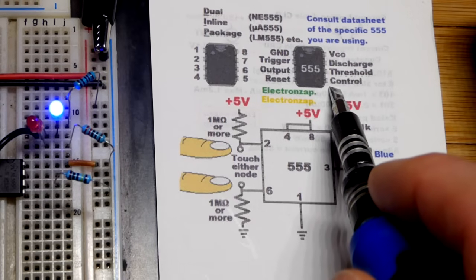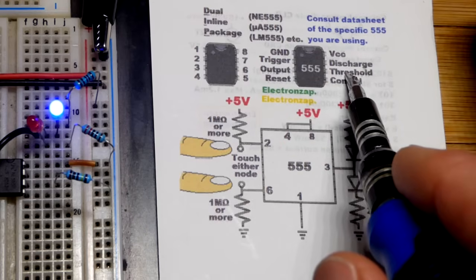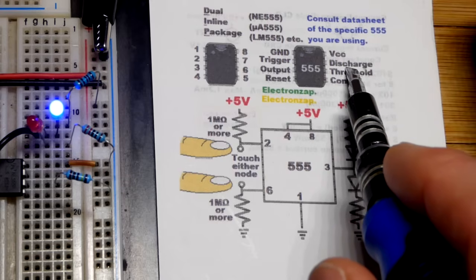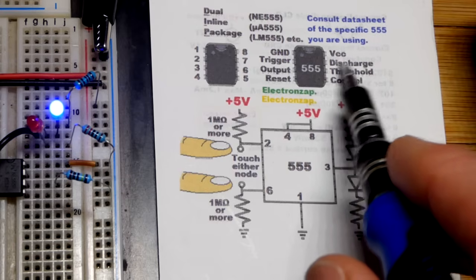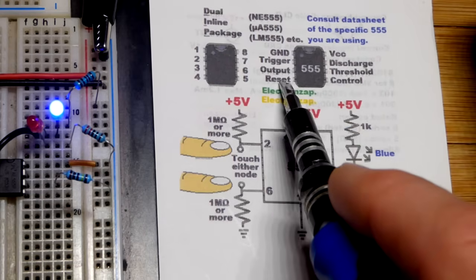There's the pin names. I used the name of the trigger pin. I think I said threshold. That's pin six. Discharge, we're not discharging anything in the circuit. That connects to ground when the output's low. Positive supply is VCC. Negative supply is ground. That's how you power it.